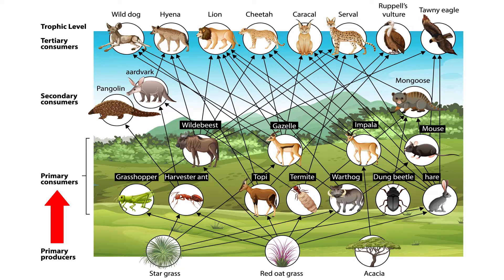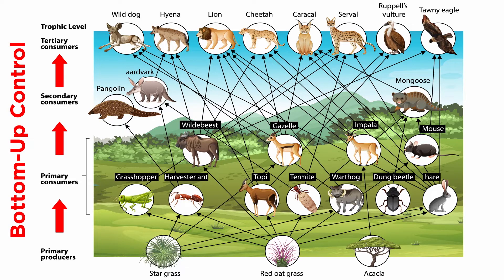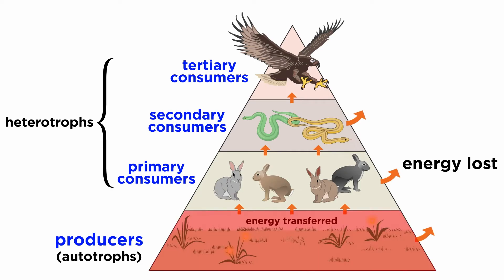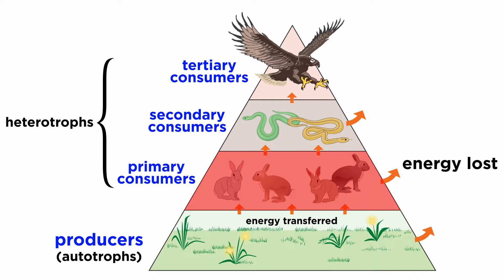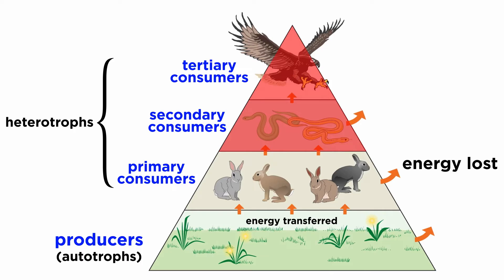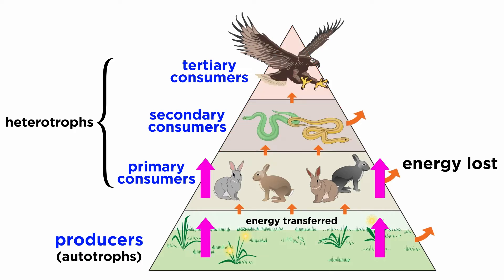Food webs illustrate energy flow from primary producers to primary consumers or herbivores, and from primary consumers to secondary consumers or carnivores. The structure of food webs suggests that productivity and abundance of populations at any given trophic level are controlled by the productivity and abundance of populations in the trophic level below them. This phenomenon is called bottom-up control. Correlations in abundance or productivity between consumers and their resources are considered evidence for bottom-up control. For example, plant population densities control the abundance of herbivore populations, which in turn control the densities of carnivore populations. Thus, the biomass of herbivores usually increases with primary productivity in terrestrial ecosystems.